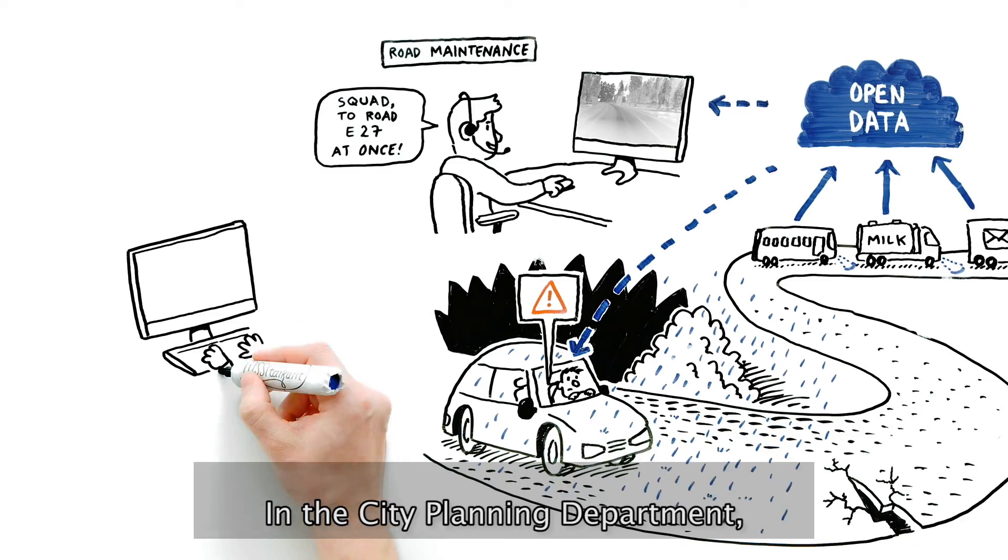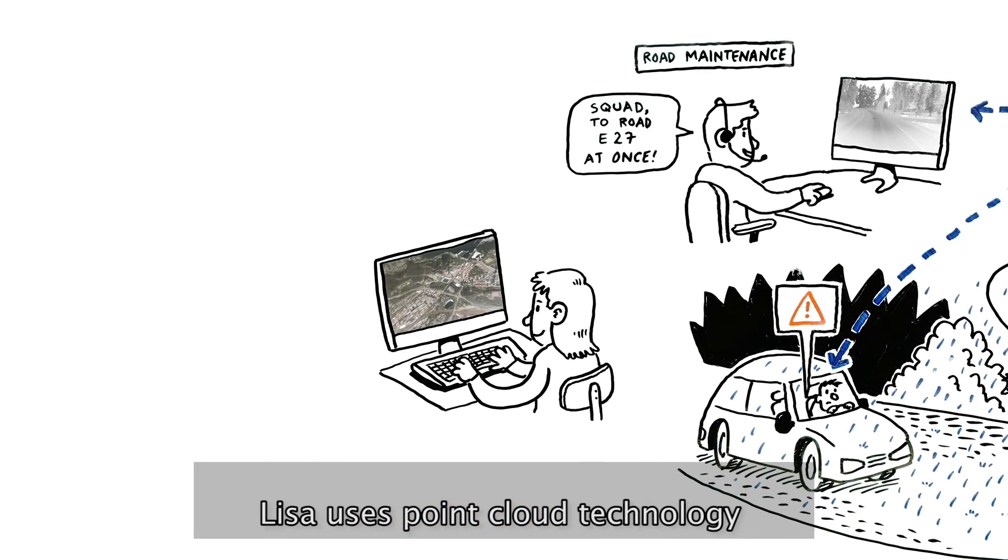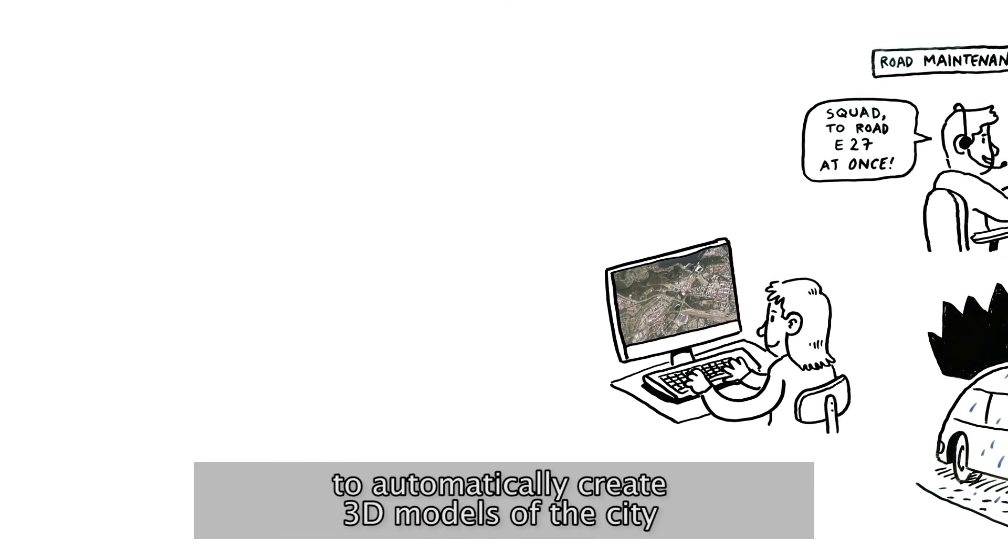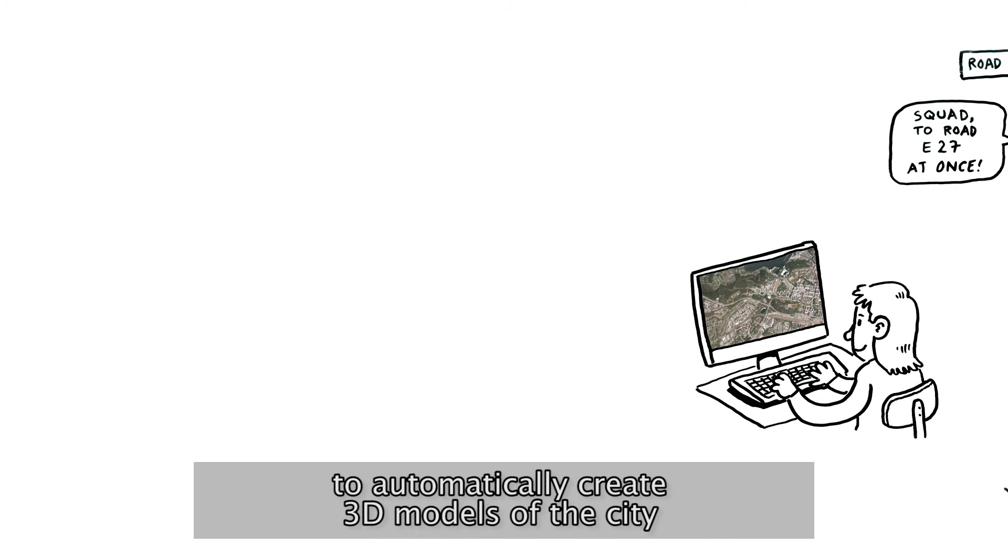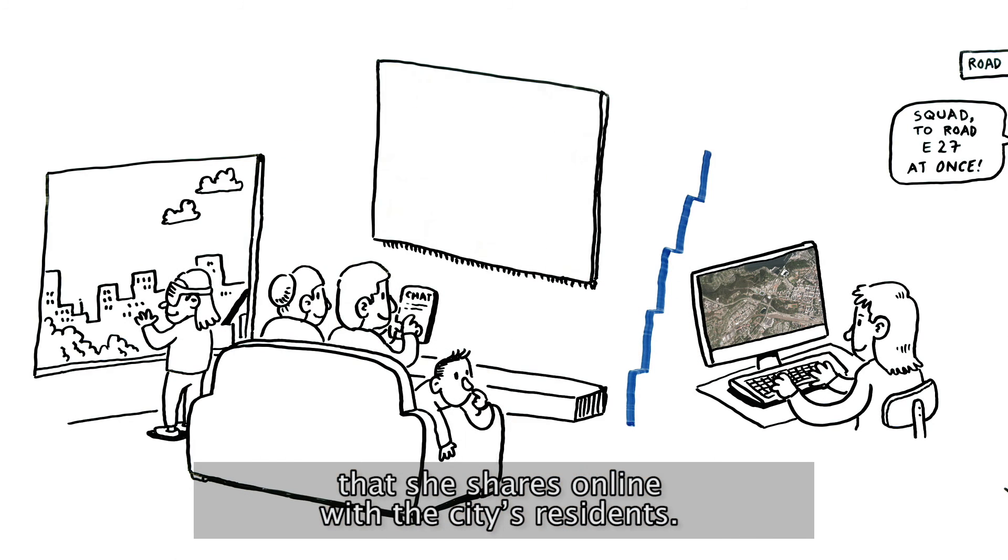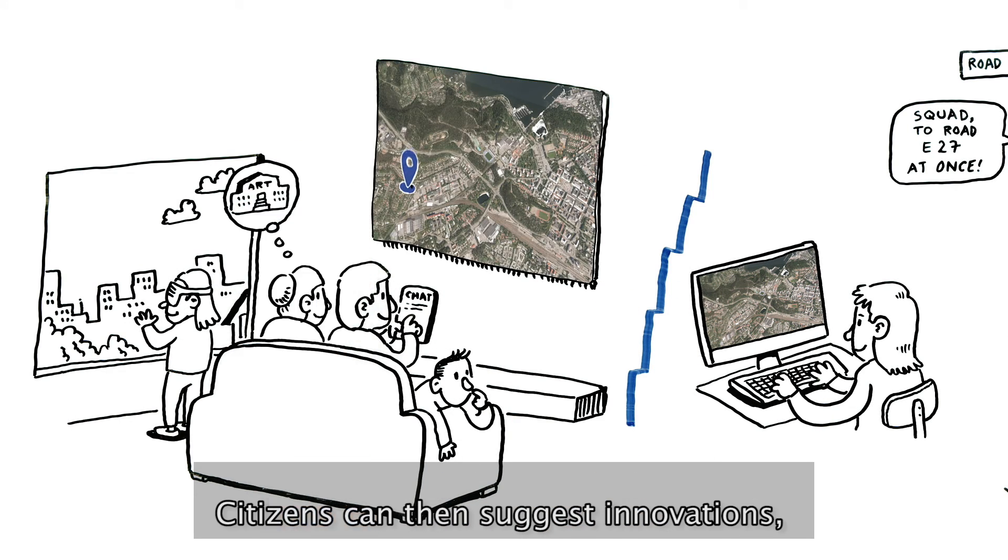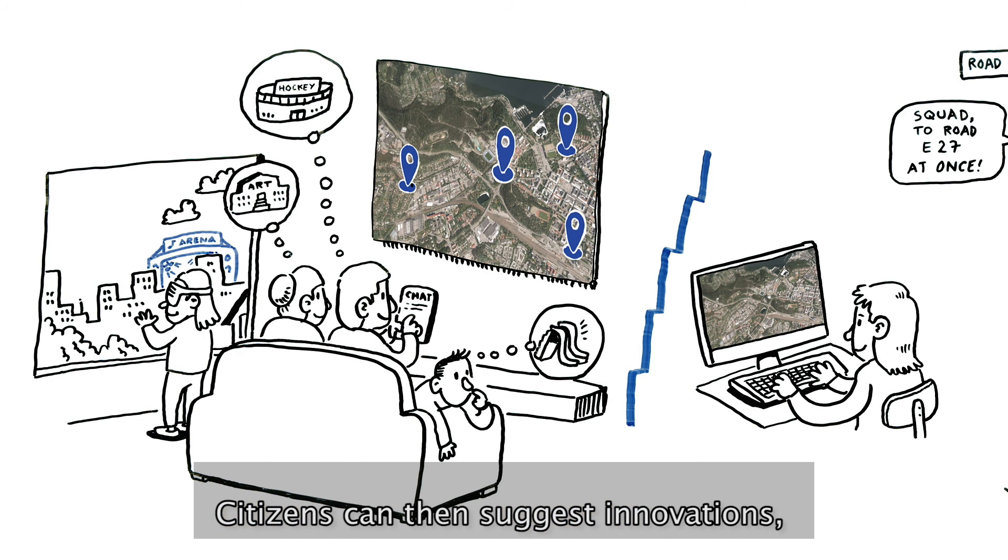In the city planning department, Lisa uses point cloud technology to automatically create 3D models of the city that she shares online with the city's residents. Citizens can then suggest innovations, becoming active in their own neighborhood planning.